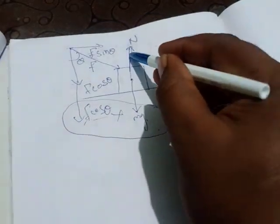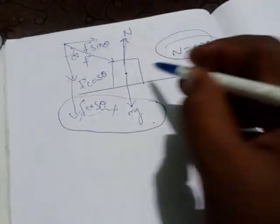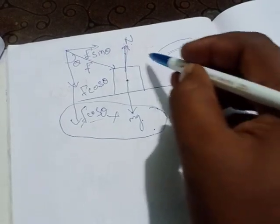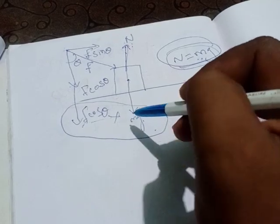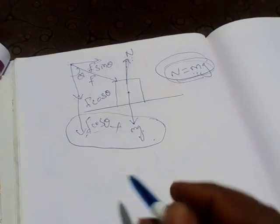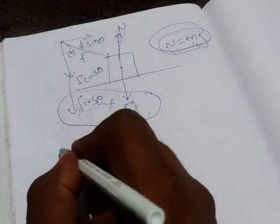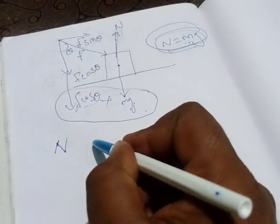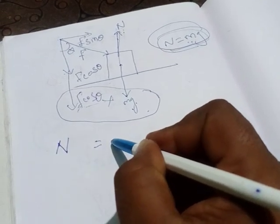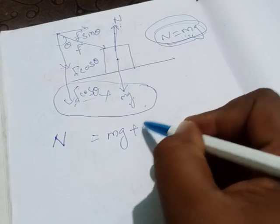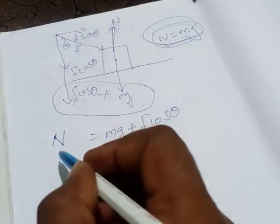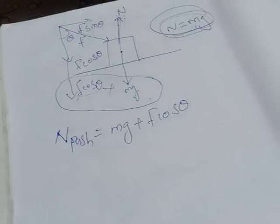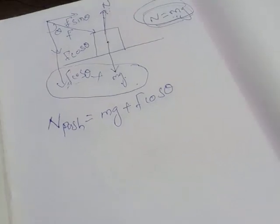Upward, only the normal force N is acting. Before, when the object was at rest, N was equal to Mg. Now, N is equal to Mg plus F cos theta. So we can write: N_push = Mg + F cos theta.